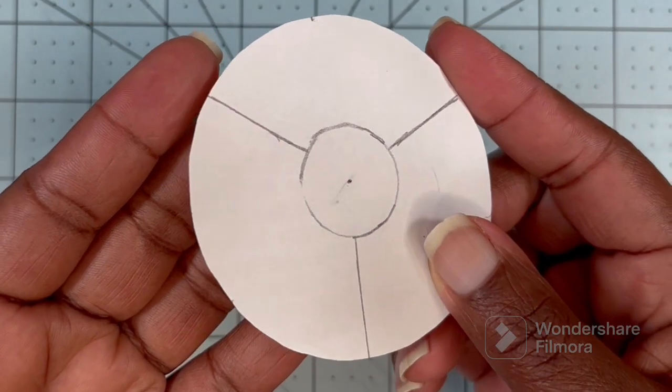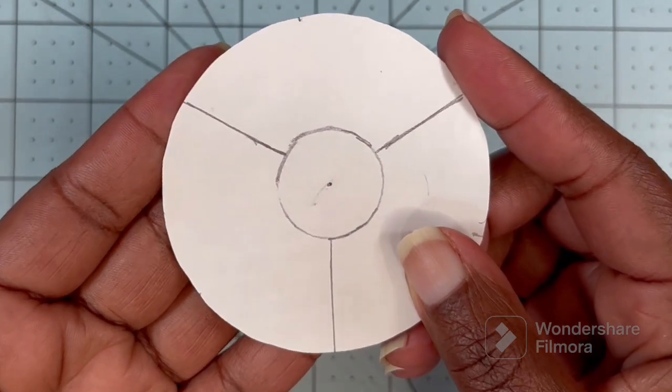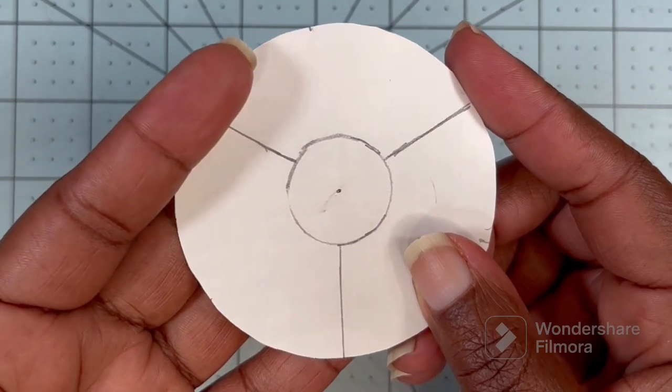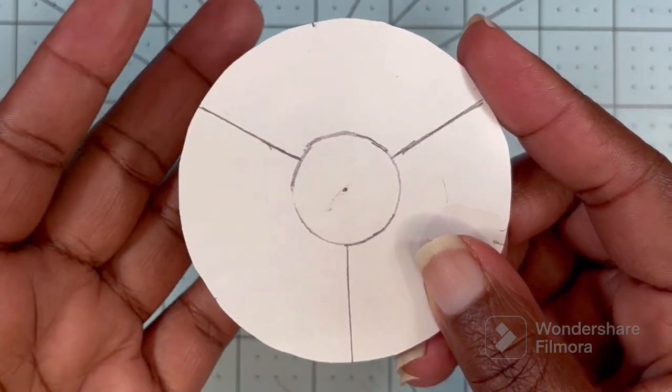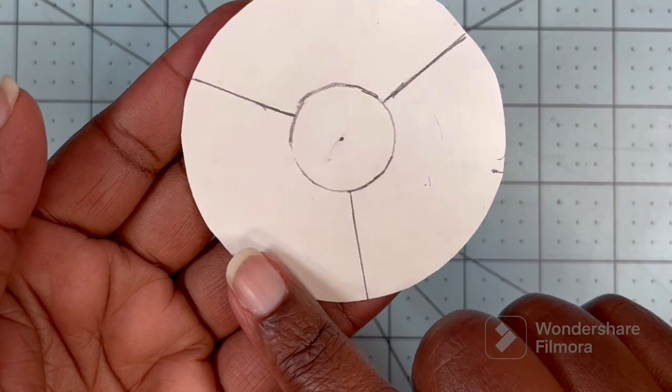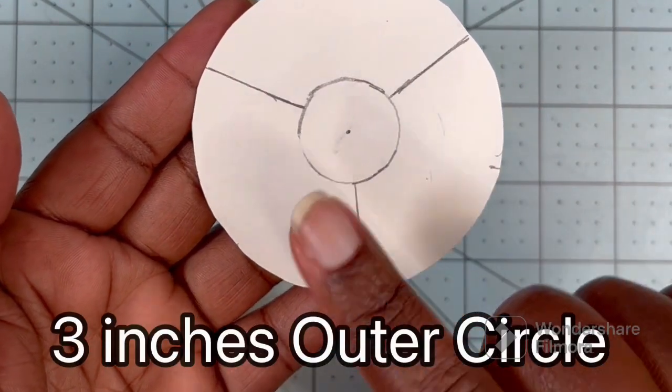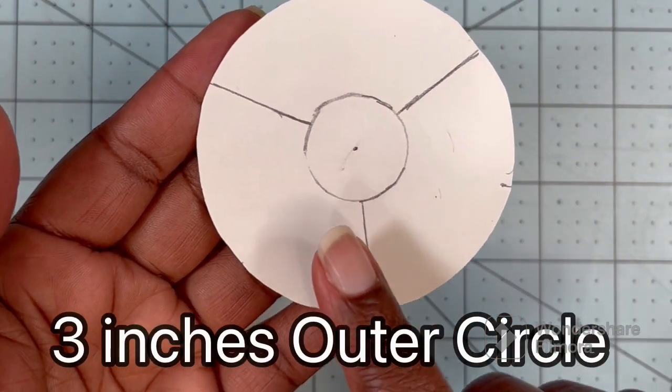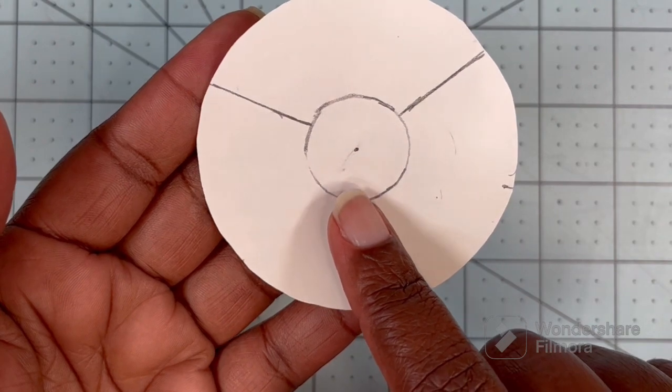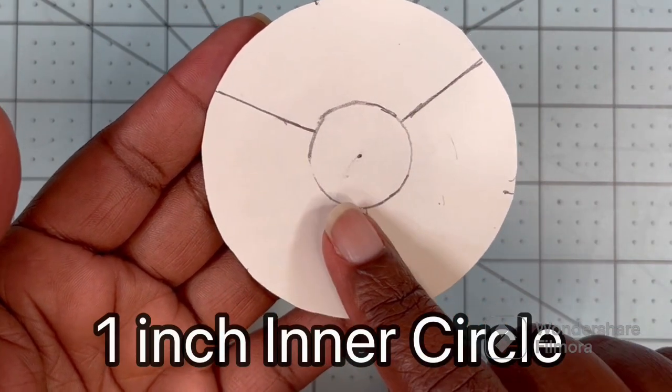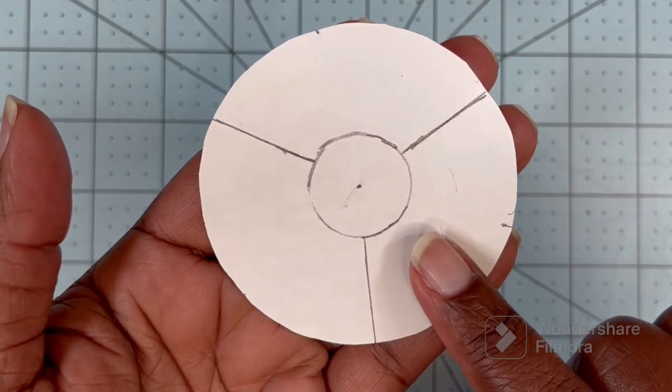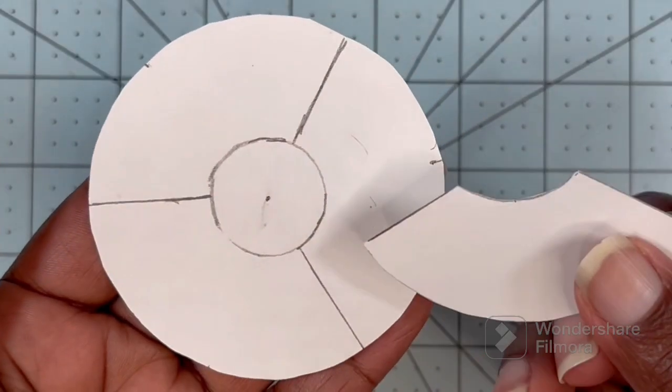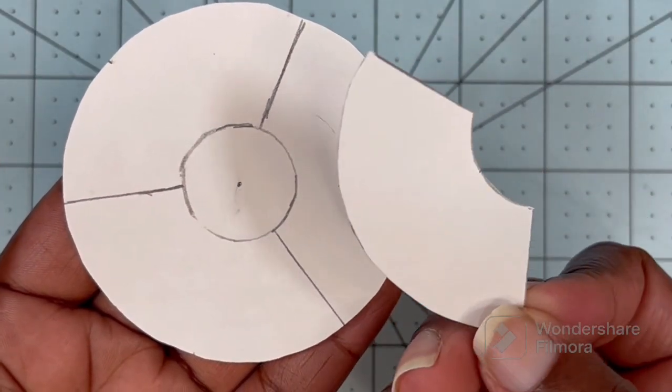To make the bell for the clarinet I'm using cardstock and you can use a different paper but I would suggest a sturdier paper for this. I just drew a circle that had a three inch diameter and within that circle I drew another one that had a one inch diameter. Next I divided this piece into three equal parts so when you cut your pieces out they should look like this.